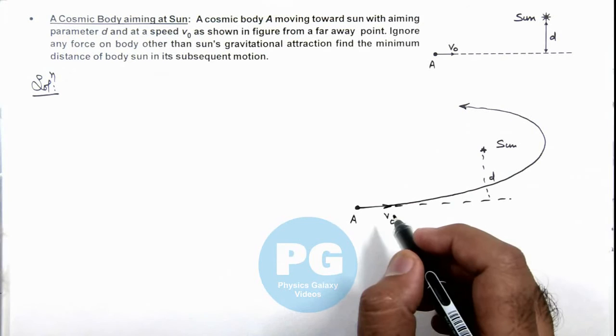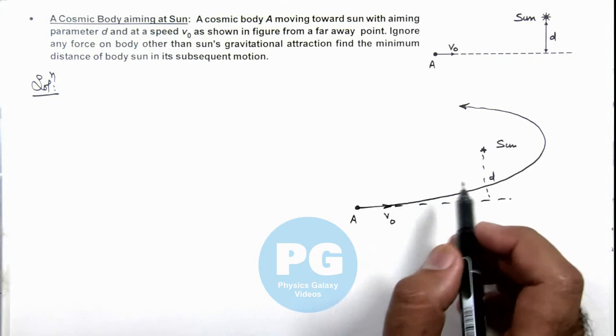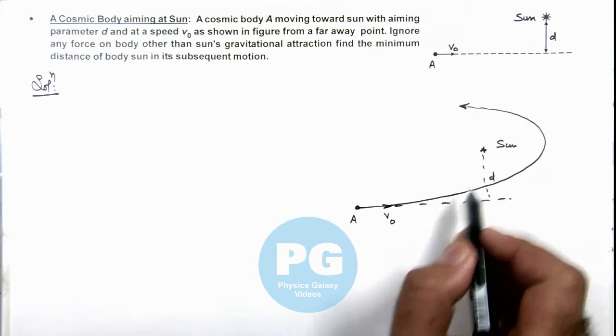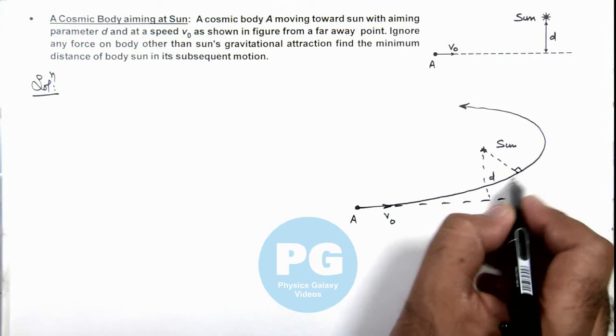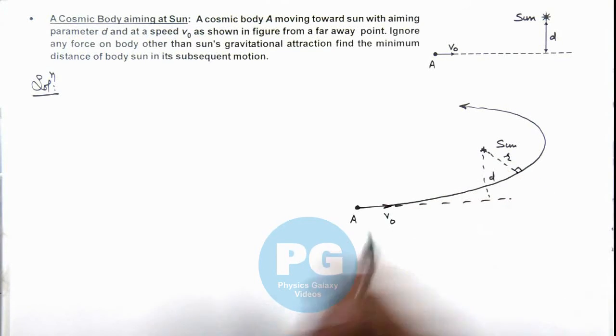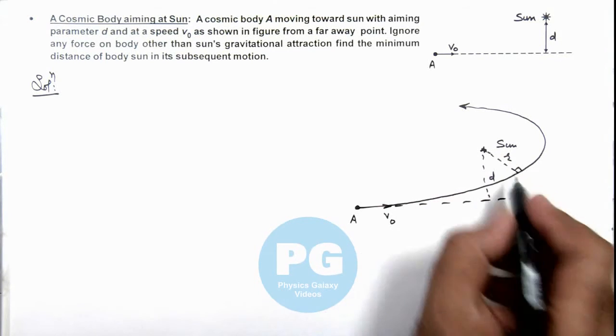So if we wish to find out the distance of closest approach of body from sun, here we can see we can drop perpendicular to the trajectory of this body, say if this is r.